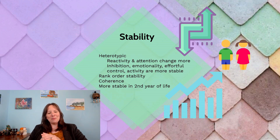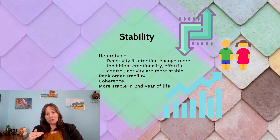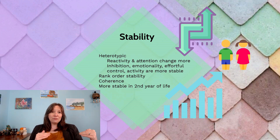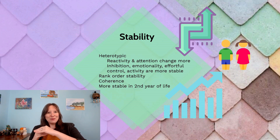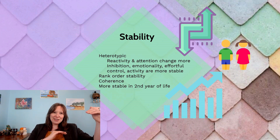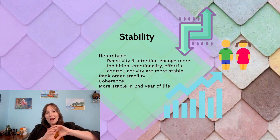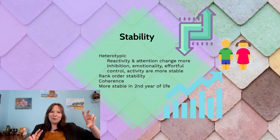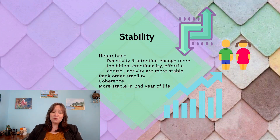Coherence is the idea that the questions we ask on a survey about three-year-olds versus eight-year-olds has to be reflective of what's going on with them and what's developmentally appropriate for that age group. If we measure it right, we might see a fascinating phenomenon known as rank-order stability. This is the idea that a child with less effortful control might start to display more effortful control, but they're still showing less compared to their same-age peers — they were below average before and they're still below average now.